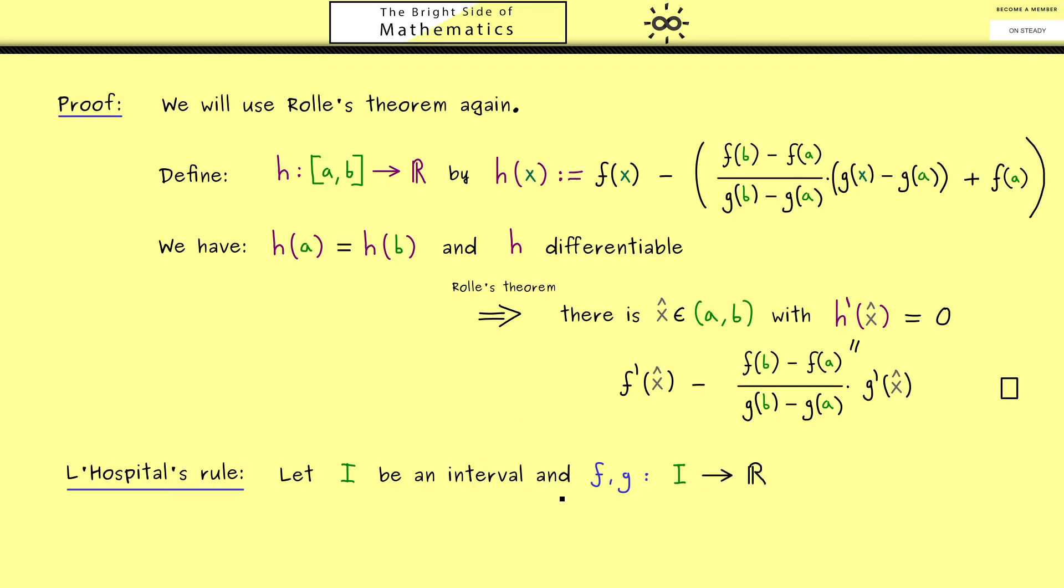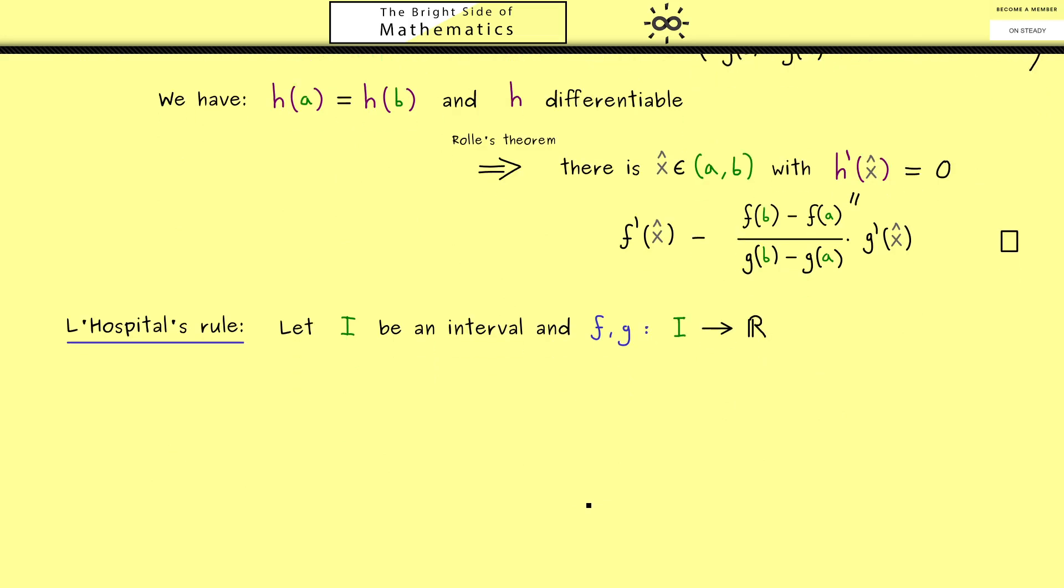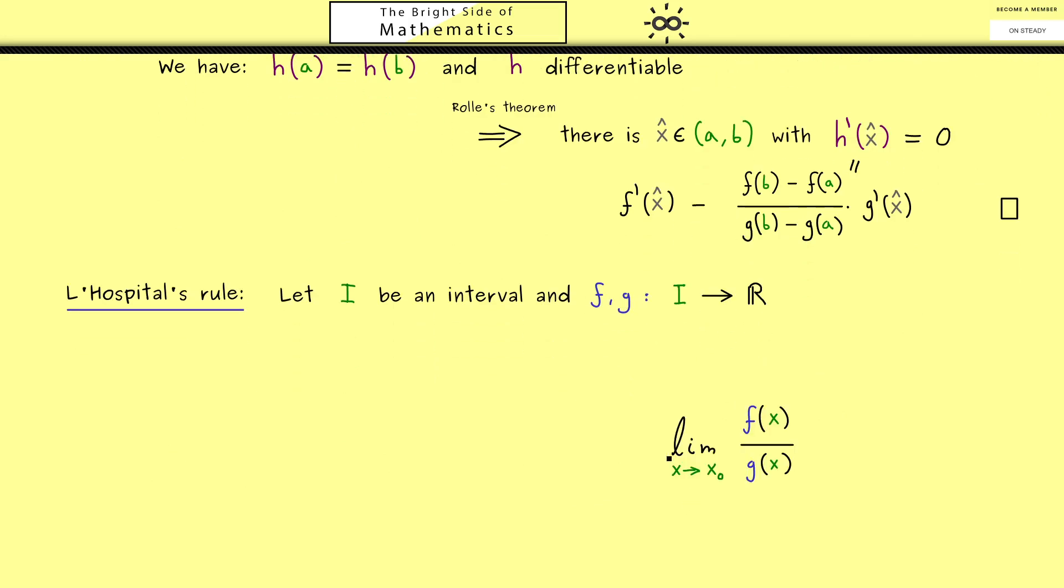Now usually the limits one wants to calculate here are given with a quotient. Namely we write it as the limit x to x₀ of f(x) divided by g(x). Of course you can always put such a limit to paper. But then the question arises does it actually exist. And indeed we have a nice possibility to answer this question for functions that are differentiable.